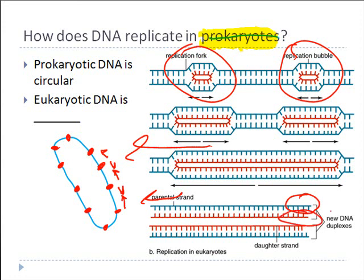By comparison, eukaryotic DNA is not circular. Instead, eukaryotic DNA is linear, and those linear segments of DNA in eukaryotes we call chromosomes.